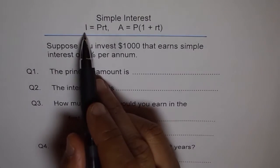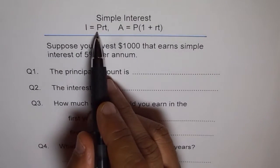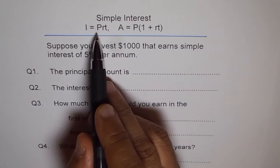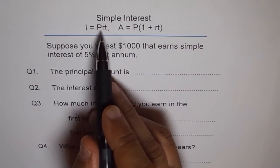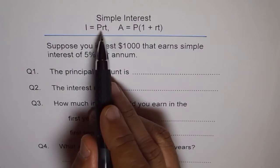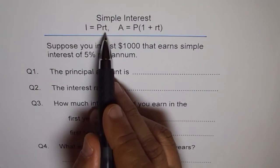So I is the interest earned and P is the principal amount invested. R is the rate of interest, simple interest per annum, per year. And T is time in years.